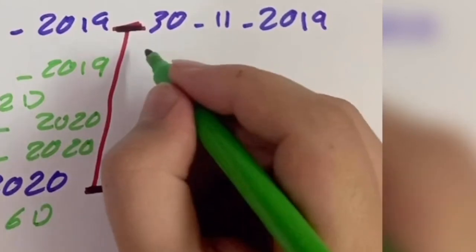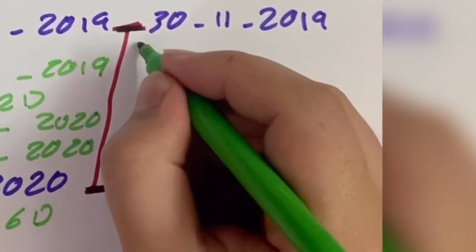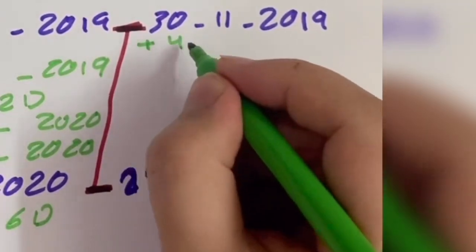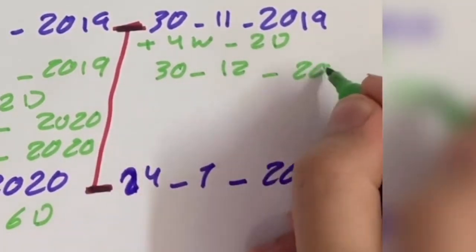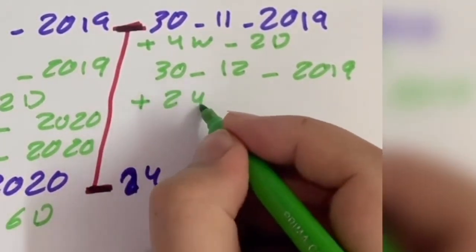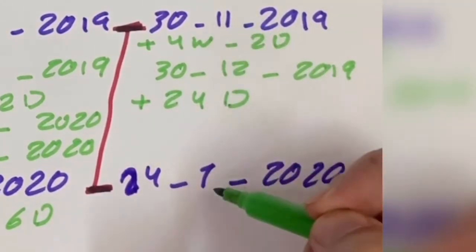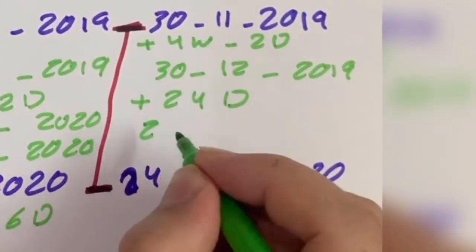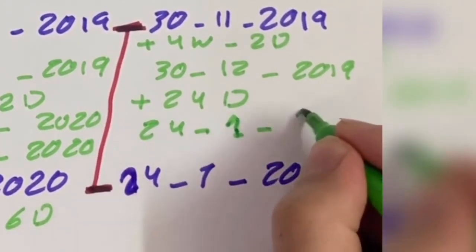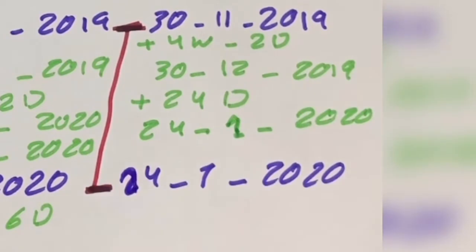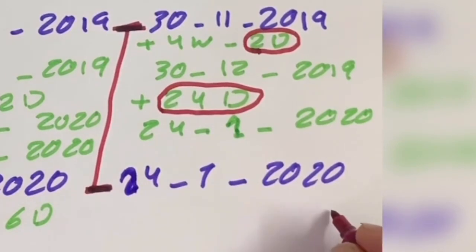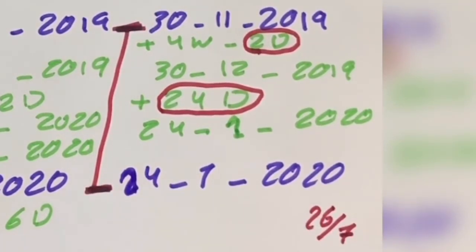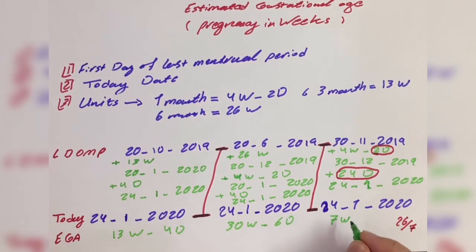The first day of the last menstrual period is day 30, month 11, year 2019. We add one month, which is 4 weeks and 2 days, giving us day 30, month 12, year 2019. We can't add another full month, so we add the remaining days needed to reach today's date, which is 24 days. Calculating the total days added, the estimated gestational age is seven weeks and five days.